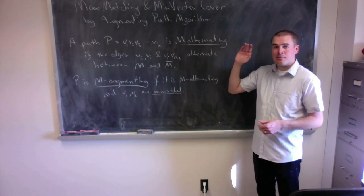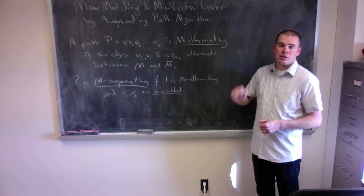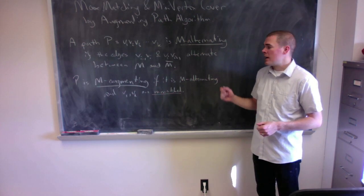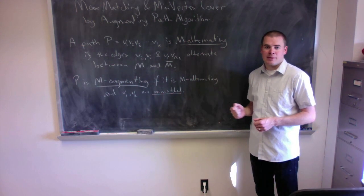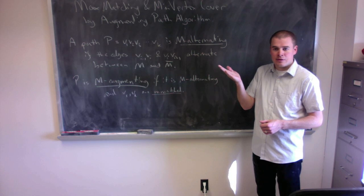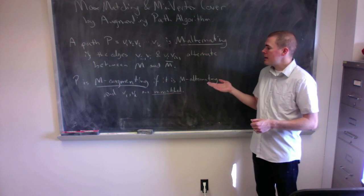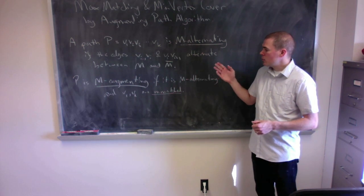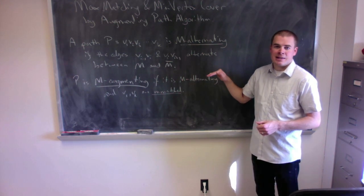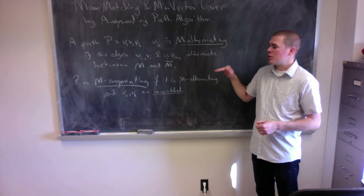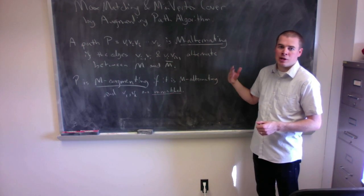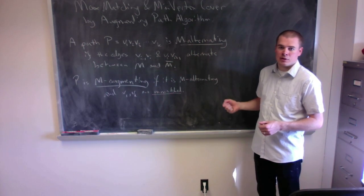How we can find a maximum matching in our bipartite graph is by continually finding M-augmenting paths to improve our matching size, and we can do that until we cannot find an M-augmenting path anymore. When we can't find an M-augmenting path, we will output a vertex cover.